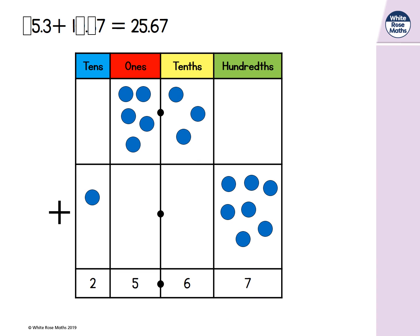First let's look in the hundredths column. The number of hundredths in the answer is 7. And there are 7 hundredths in our hundredths column. So we don't need to add any hundredths.